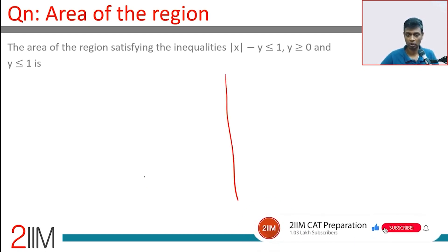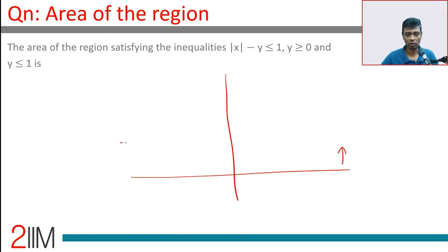Let's draw this one. y ≥ 0 is this, y ≤ 1, y = 1 at this. This region we're talking about, this band. |x - y| ≤ 1.